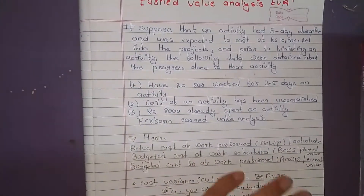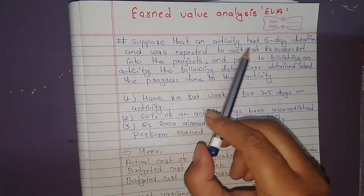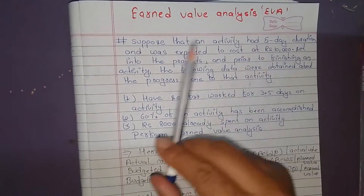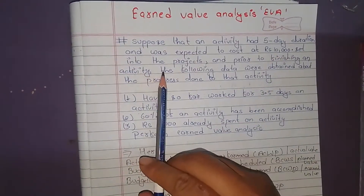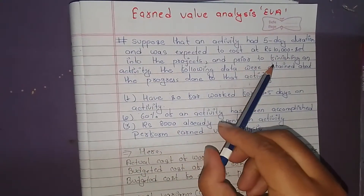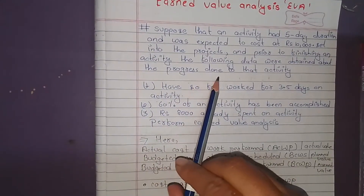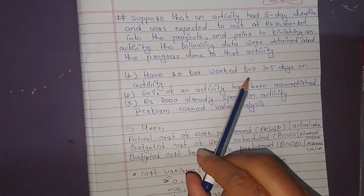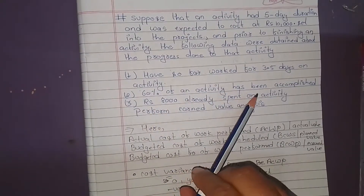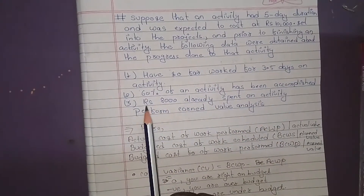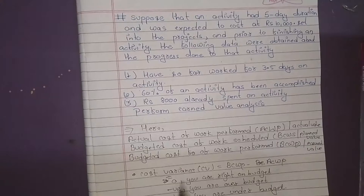Now we apply this formula to a numerical example. Suppose that an activity had a five-day duration and was expected to cost RS 10,000. Into the project period, to finish the activity, the following data were obtained: workers have so far worked for 3.5 days on the activity, and 60% of the activity has been accomplished.